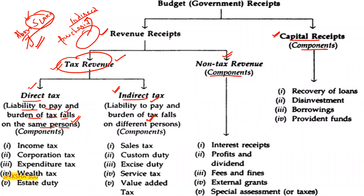Under direct tax we have: income tax, corporation tax, expenditure tax, wealth tax, and estate duty. Under indirect tax we have: sales tax, custom duty, excise duty, service tax, and value added tax.